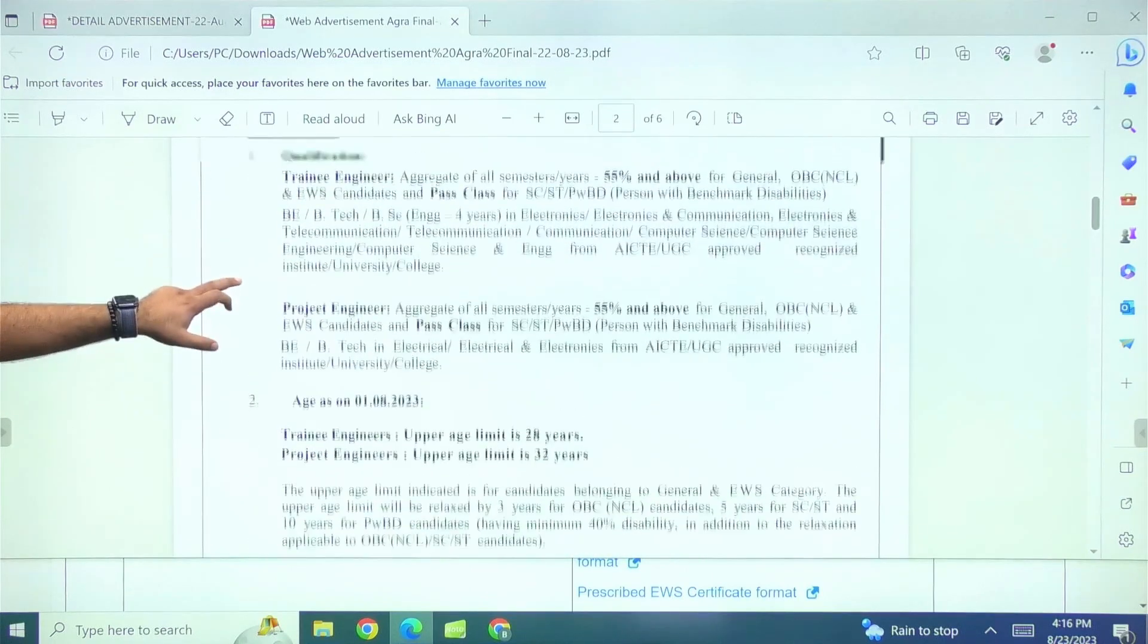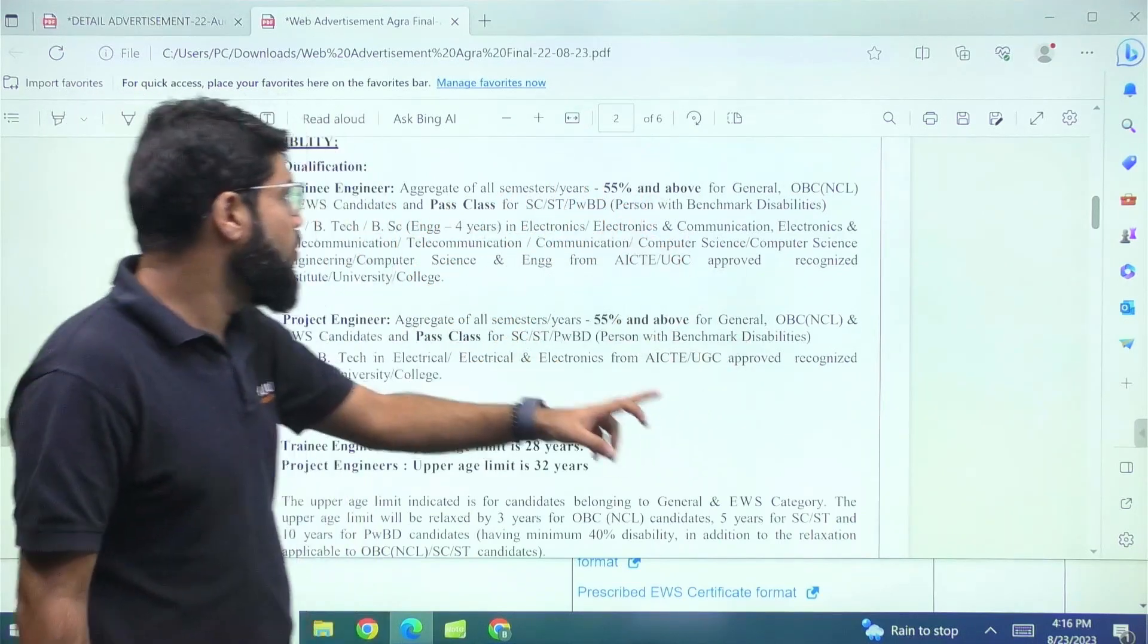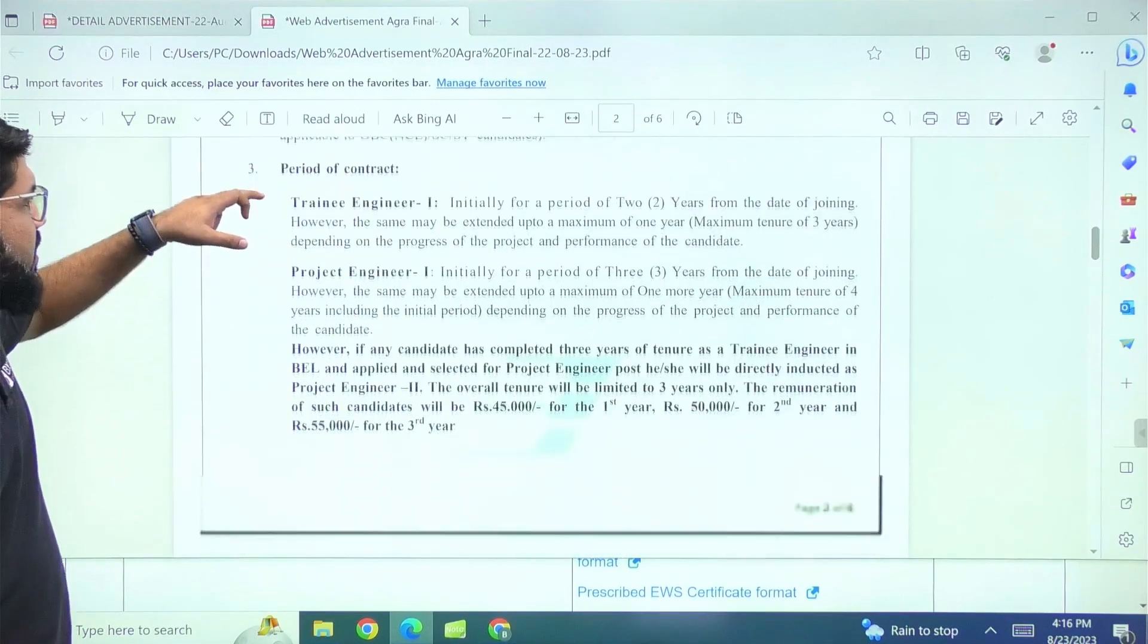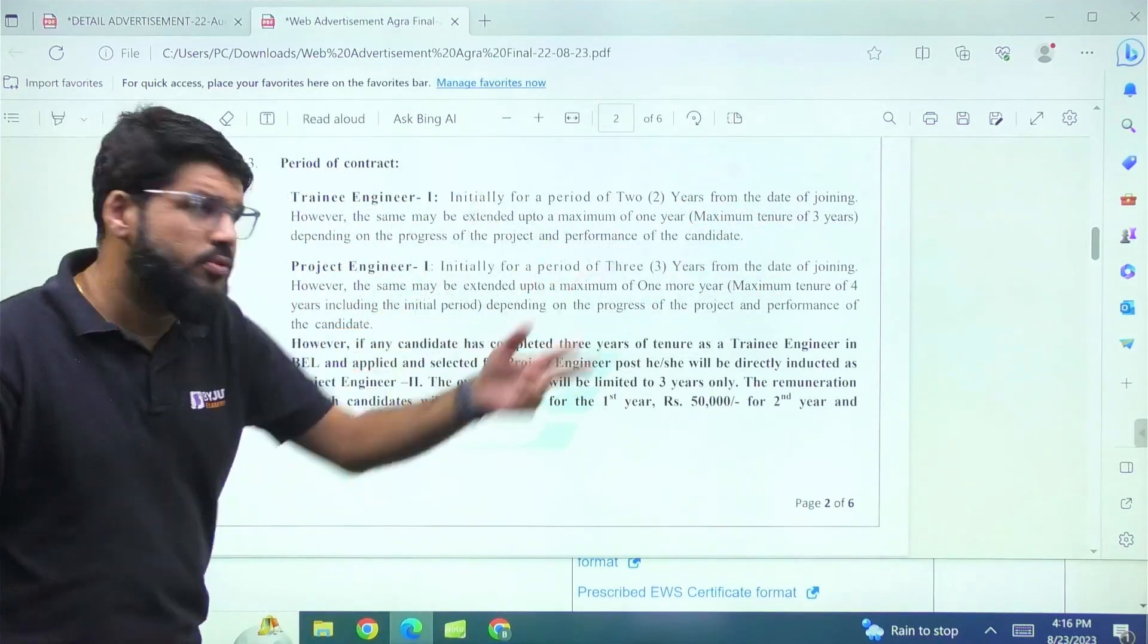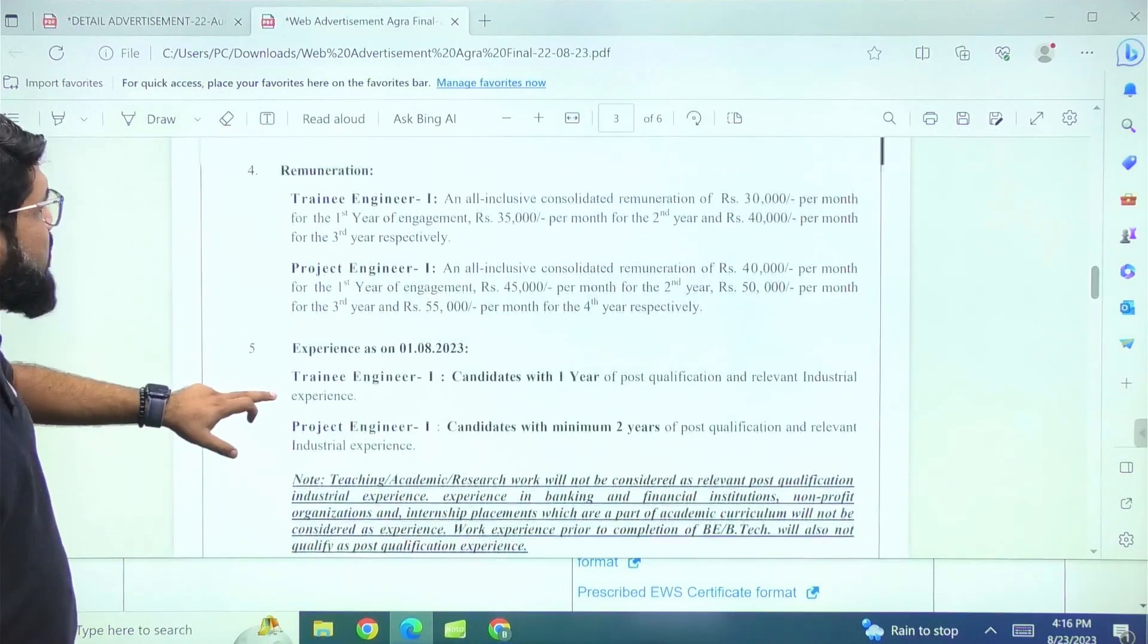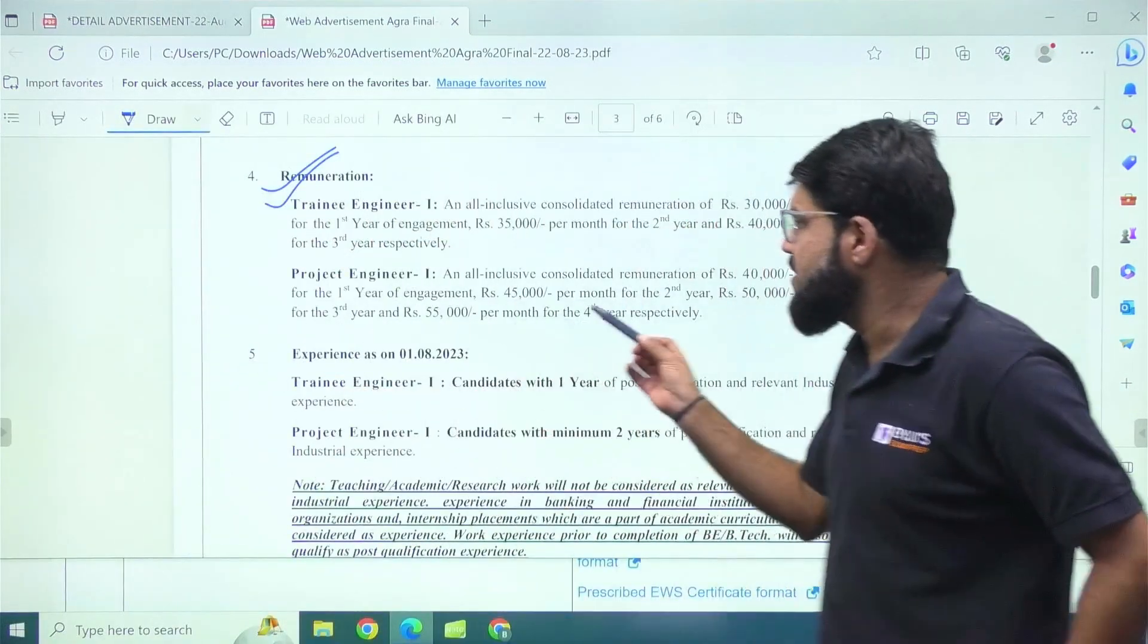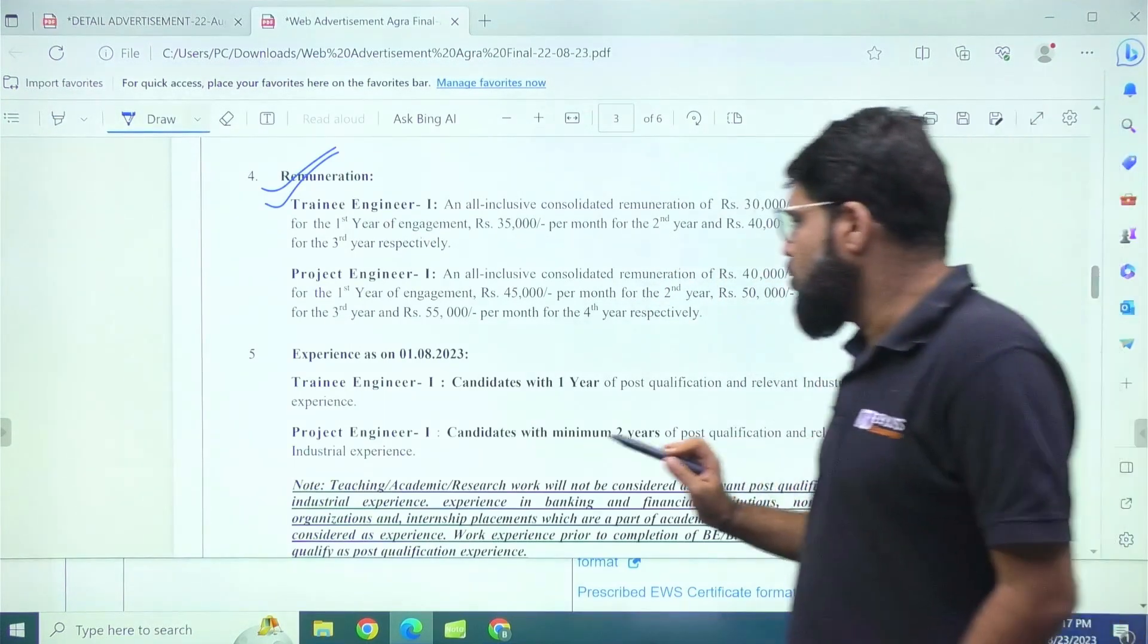Now here, what are the important updates is there is a minimum qualification required for trainee engineer that you should have 55% and above. The aggregate the final CGPA of your degree should be more than 55% and above same requirement is there for the project engineer as well. Age limit already we discussed period of contract trainee engineer same two years extendable up to three years for project engineers again the same three years extendable up to four years. So all this remains to be same.